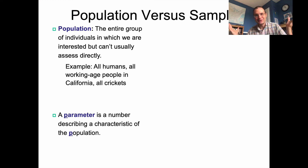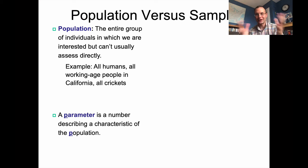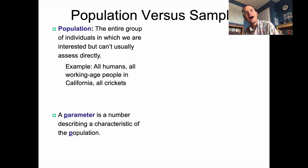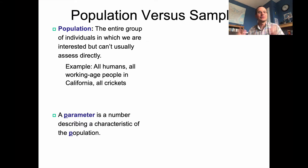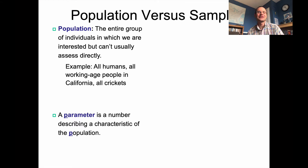If you want to make some statement about how human beings operate as an entire species, you normally cannot go around the entire world and talk to or study every single human being. You normally look at a subset of human beings and from that subset you draw conclusions about all the human beings in the world. Hopefully that jump to a conclusion about everybody is justified, but you never know exactly for sure because you can't study everybody.